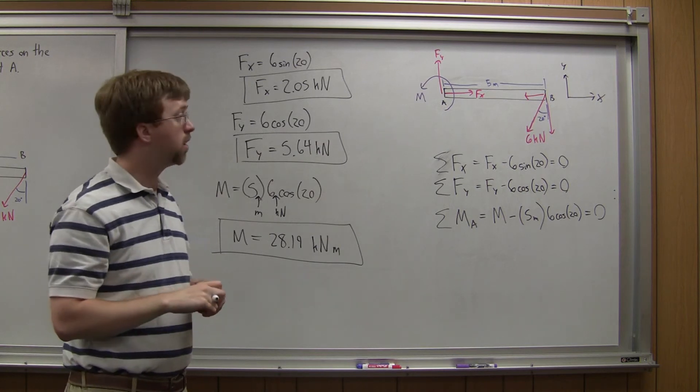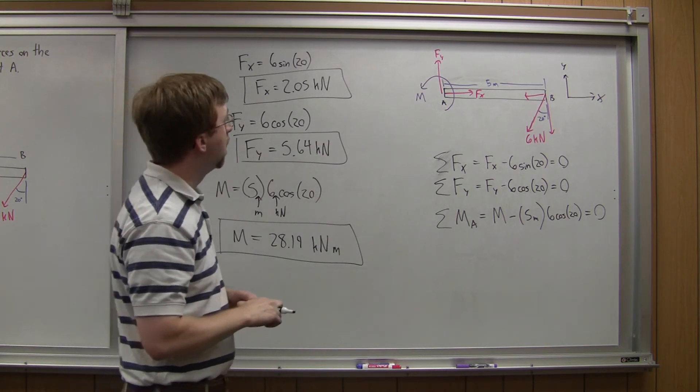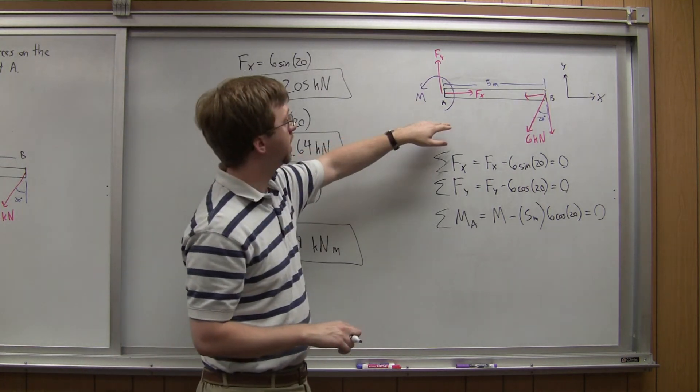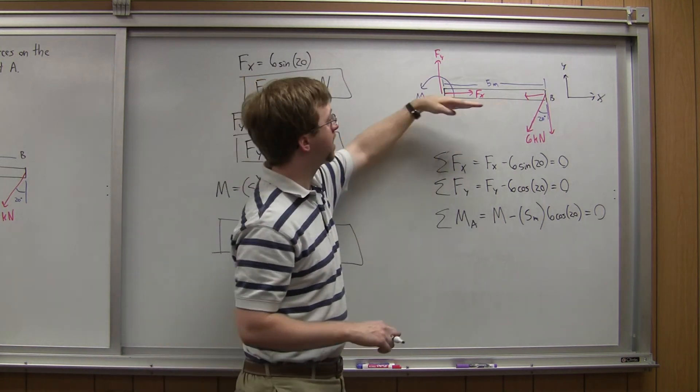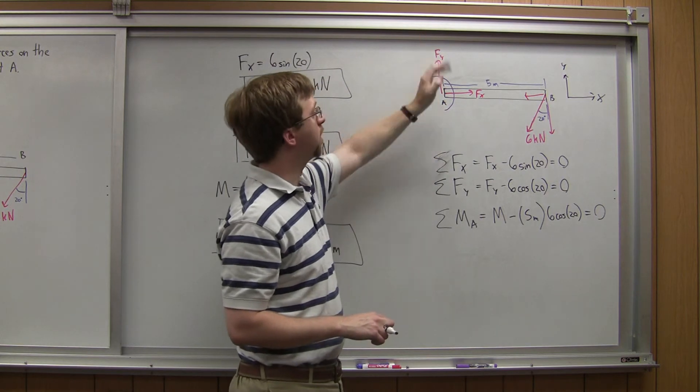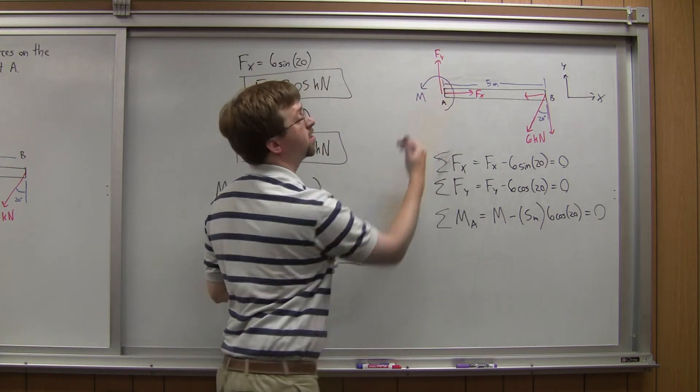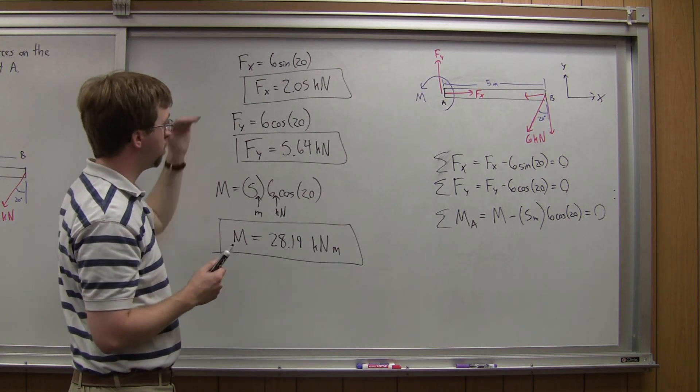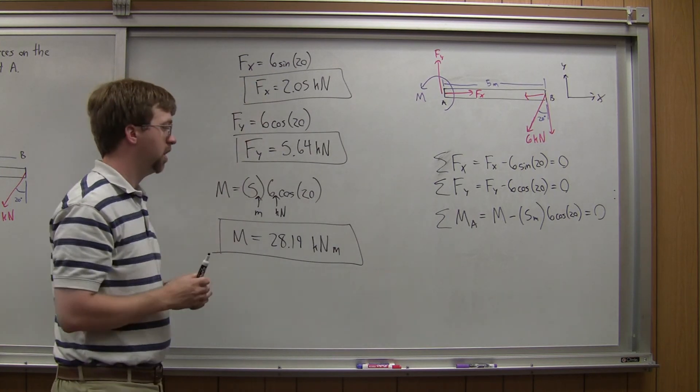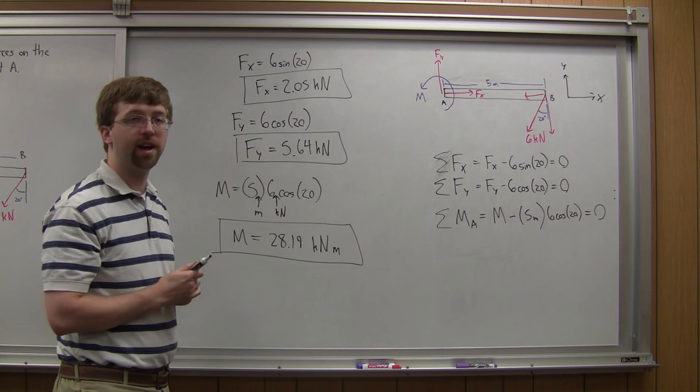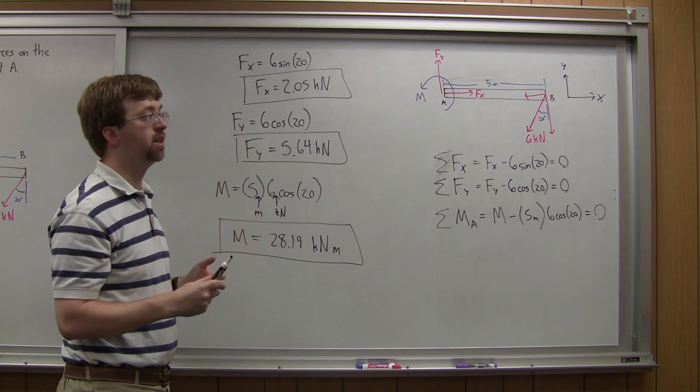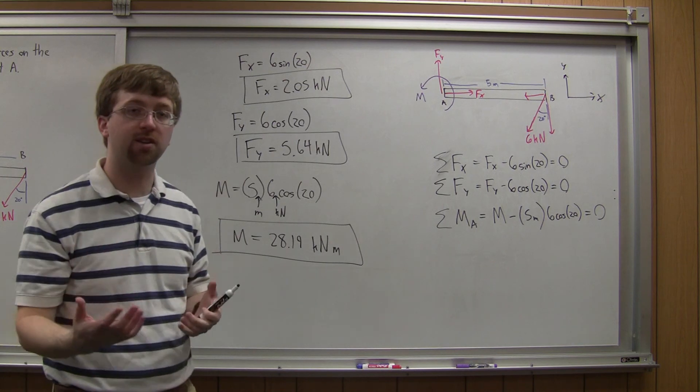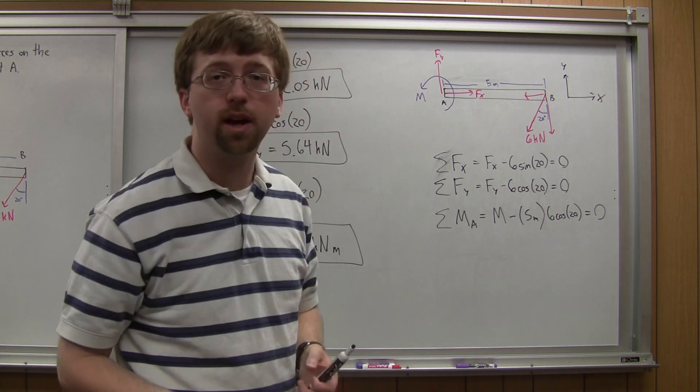With that, I solved for all my reaction forces. All the positive numbers here mean that the direction, so Fx is actually going in that direction, Fy is actually going up, and the moment is a positive moment. So all the directions were correct. And it's also important to remember this kilonewtons, or kilonewton meters, is a unit that just means 1,000 newtons. With that, I've solved for all my unknowns at the reaction point A. Thank you for watching, and I hope to see you again.